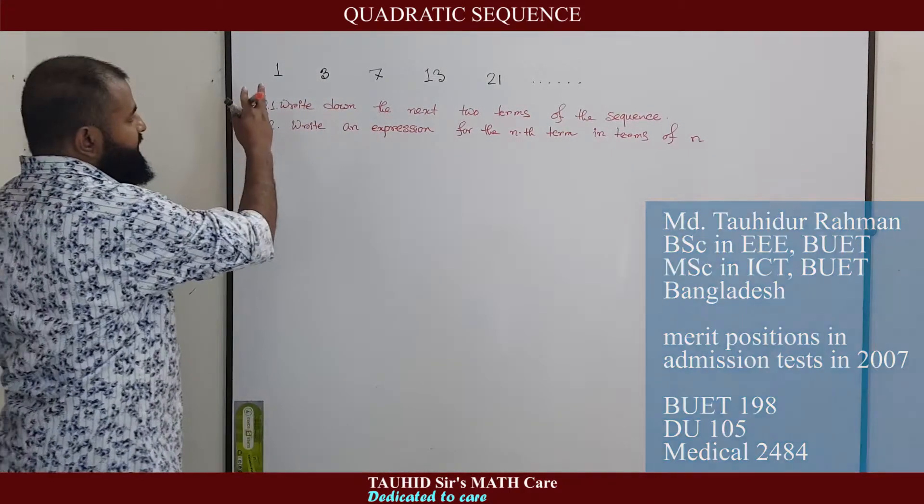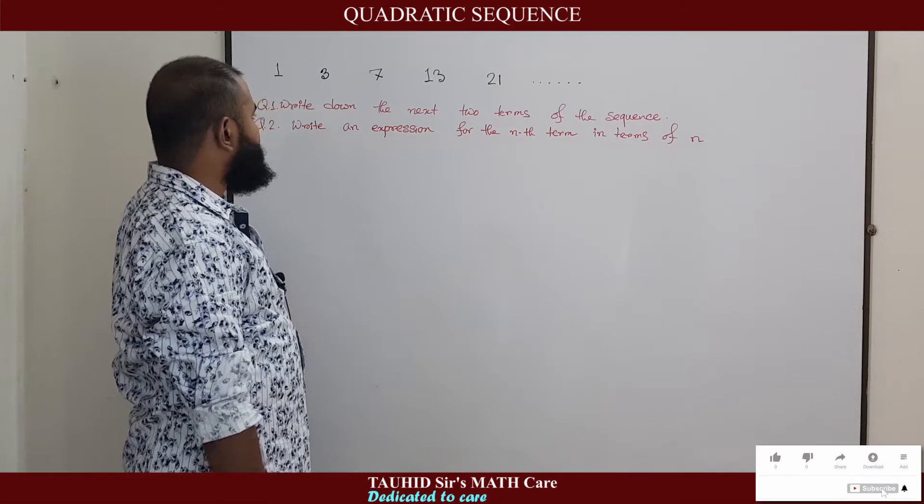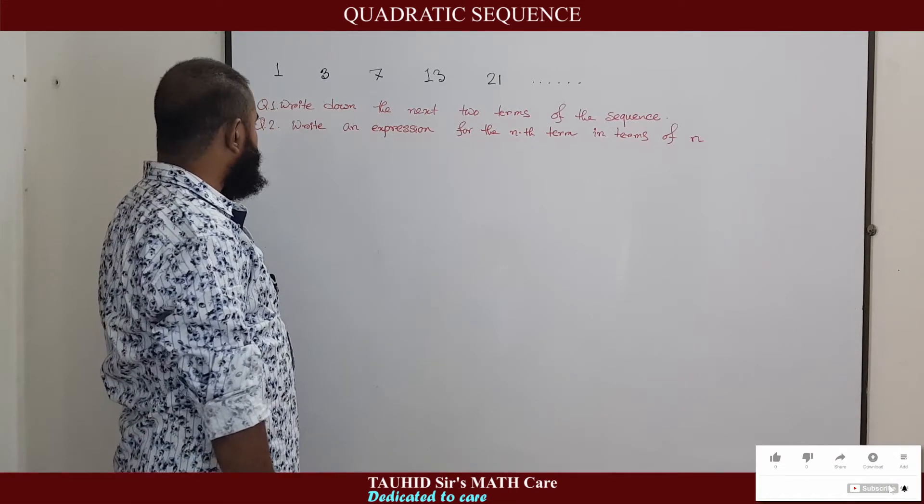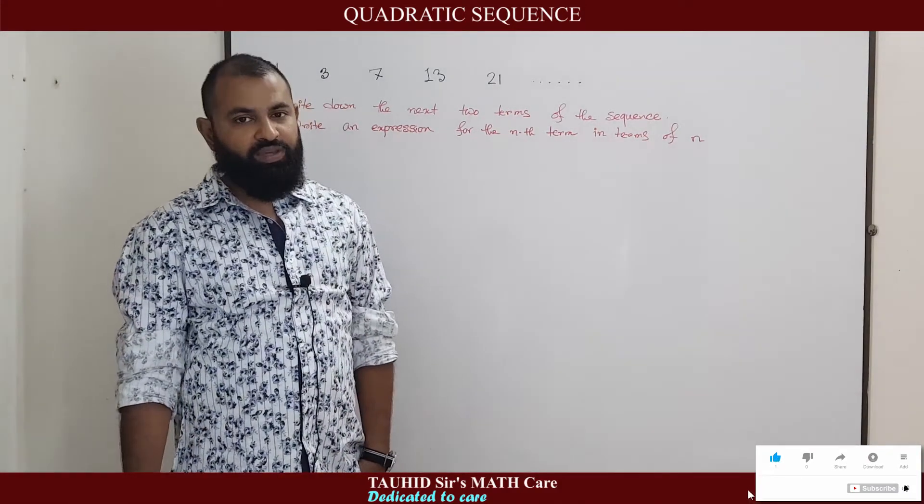Here you can see an example: 1, 3, 7, 13, 21 continues. You are asked to find the next two terms of this sequence and you are also asked to write an expression for the nth term in terms of n.